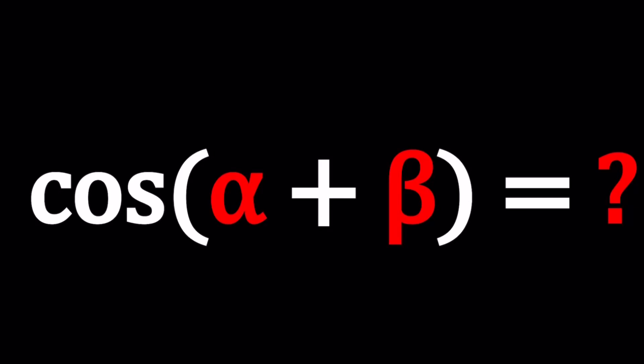Hello everyone, welcome to A plus B I. This channel is all about complex numbers and in this video we're going to be proving an identity. But I wanted to just pose it as a question: what is cosine alpha plus beta?